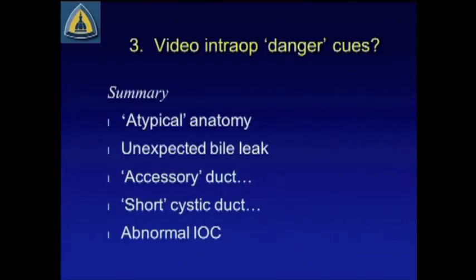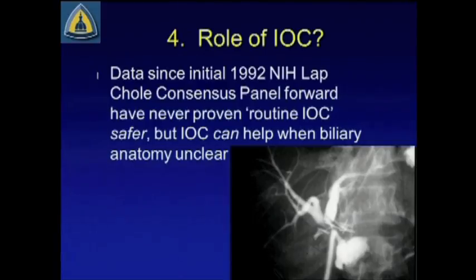Other intraoperative danger cues: atypical anatomy, the unexpected bile leak, the so-called accessory duct which may well be one of the ductal structures you're trying to identify, the so-called short cystic duct — which is usually a nomenclature for inadequate dissection and unfolding of the infundibulum, and you're actually looking at the common duct coming out from beneath — or an abnormal intraoperative cholangiogram. Data since the initial 1992 NIH laparoscopic cholecystectomy consensus panel have never really proven that routine intraoperative cholangiography is safer, but it has demonstrated that it can help when biliary anatomy is unclear.